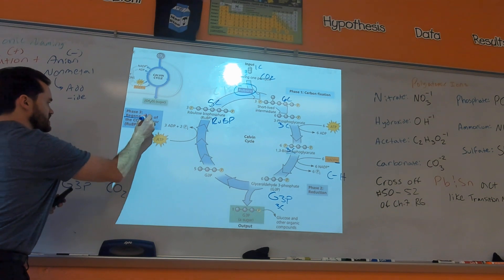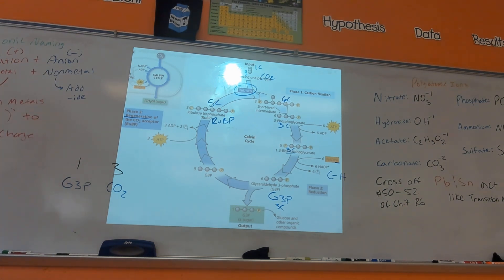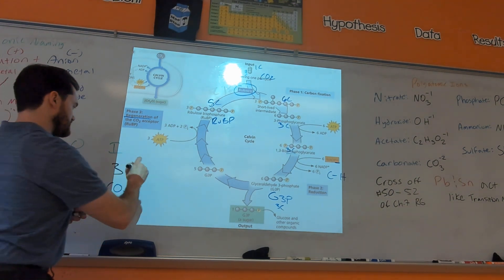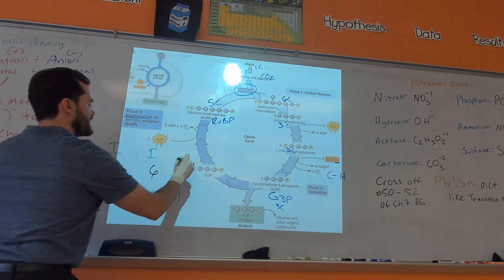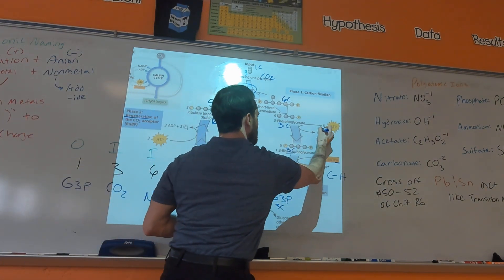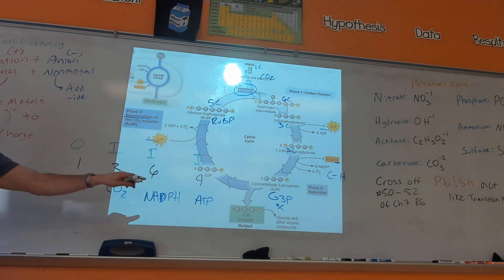The last phase is regeneration — we have to regenerate the RuBP used to run the cycle in the first place. The key numbers are: to make one G3P, you invest three CO2s, six NADPHs, and nine ATPs — six ATPs used in the reduction step and three ATPs used in regenerating RuBP. So: one G3P made, three CO2s invested, six NADPHs invested, nine ATPs invested.